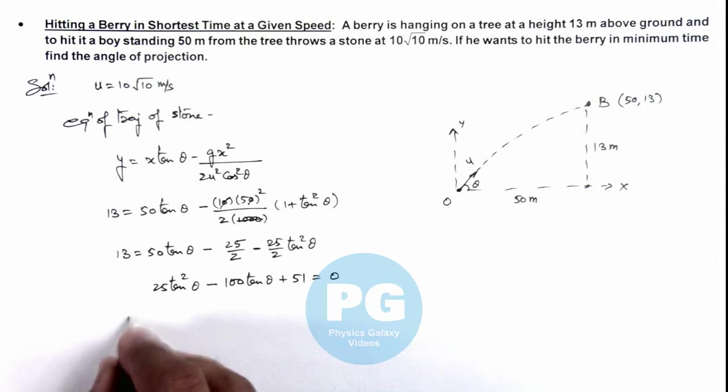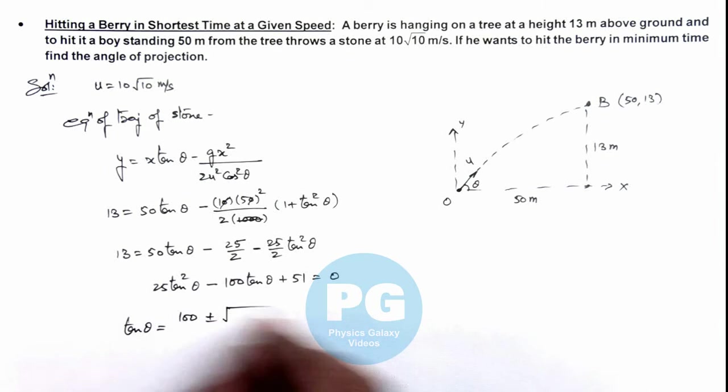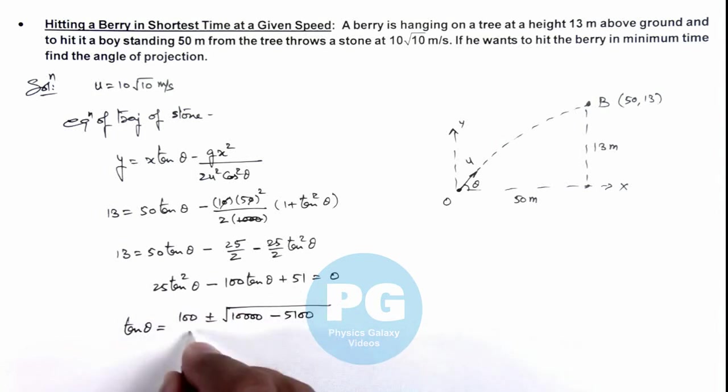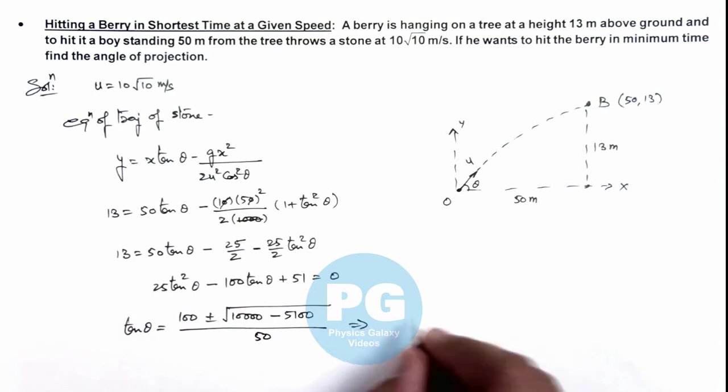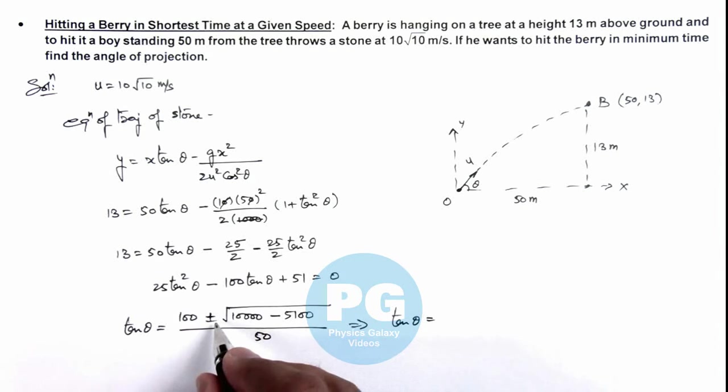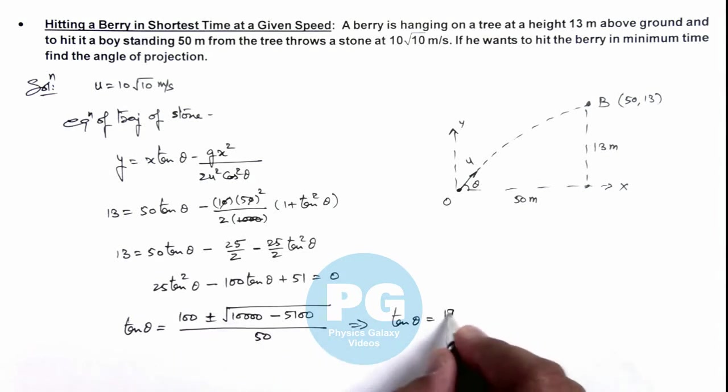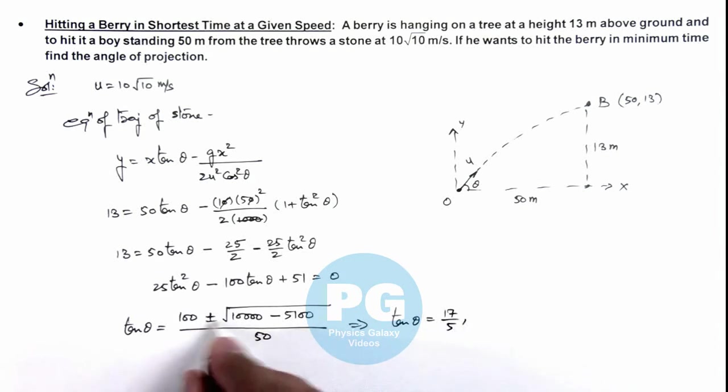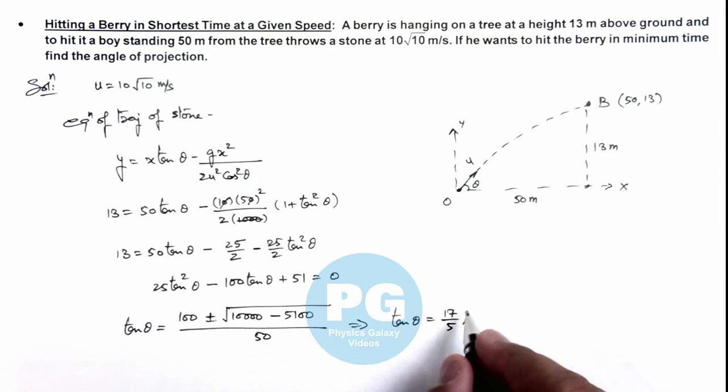So on solving the quadratic equation we get the value of tan theta which is 100 plus minus root of, this b squared is 10 thousand minus 4 ac we can take as 50, 100 divided by 50. So this is giving us 2 values of tan theta, one is taking with positive sign that will be 17 by 5, and other is by taking negative sign which is 3 by 5.